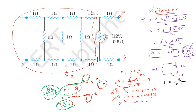The current is equal to EMF divided by total resistance. Total resistance equals external resistance plus internal resistance, which is 1 plus root 3 plus 0.5. The answer comes out to approximately 3 amperes.